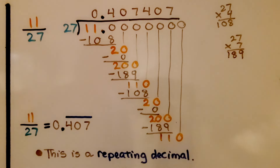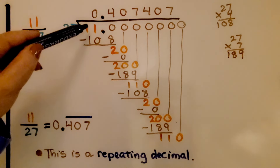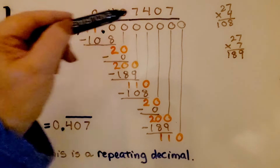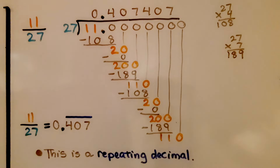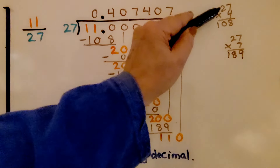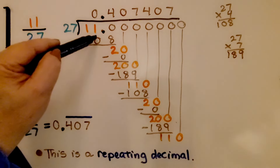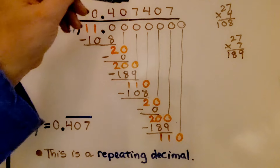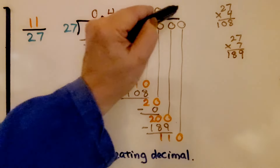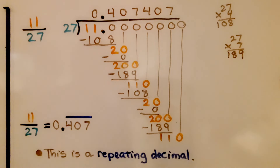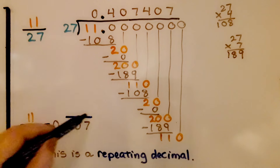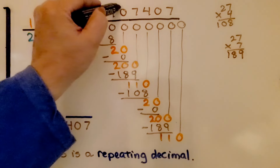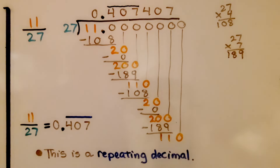For 11 over 27, we do 11 divided by 27, with 11 on the inside as the dividend and 27 on the outside as the divisor. We add a decimal point and several 0s to continue dividing. Since 27 times 4 is 108 and 27 times 7 is 189, we end up with 0.407407, and this will continue to repeat. We write it as 0.407 with a bar over the 407 to show that these three digits repeat. This is a repeating decimal.